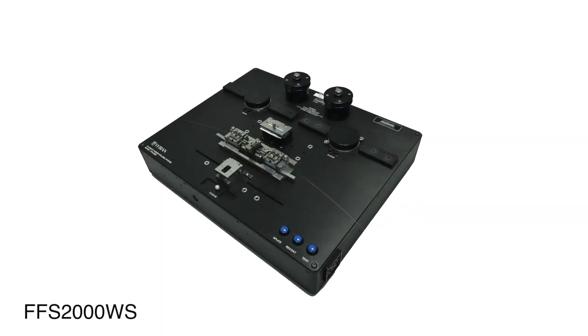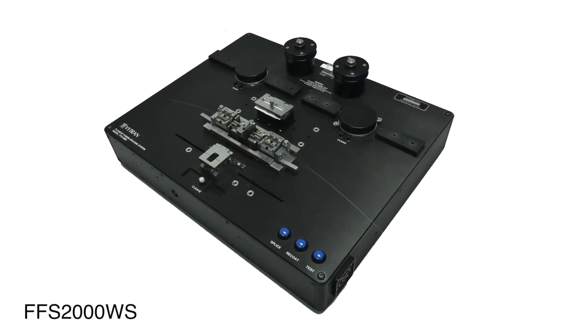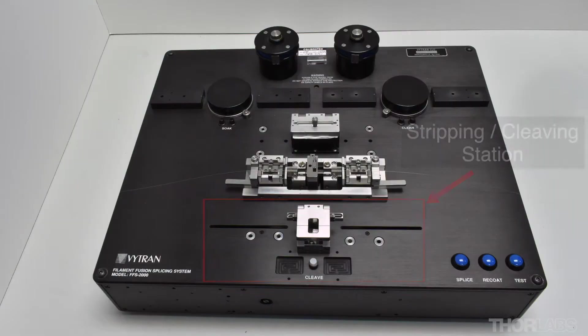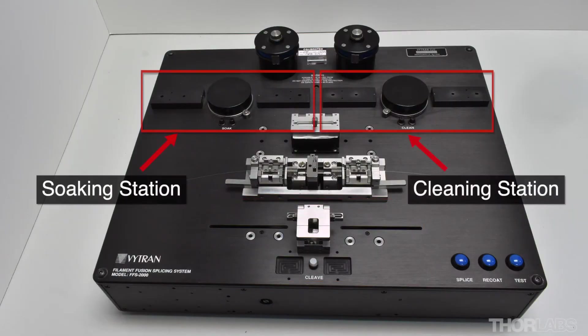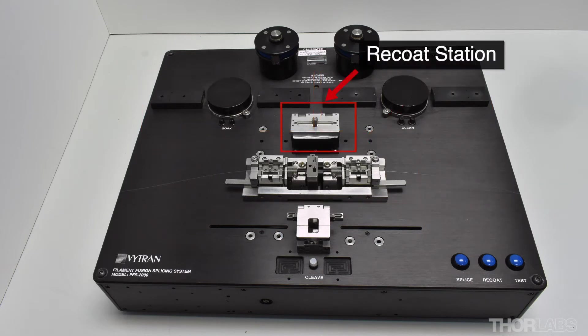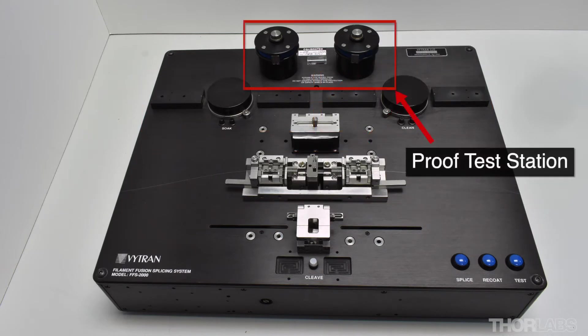The FFS2000 is a fusion splicing workstation capable of performing all steps of the splice process: strip, cleave, clean, splice, recoat, and proof test.